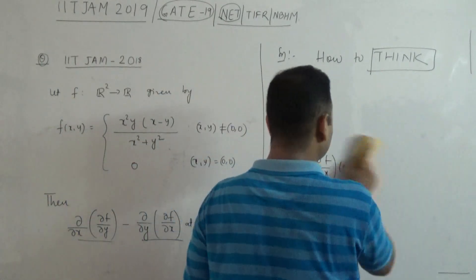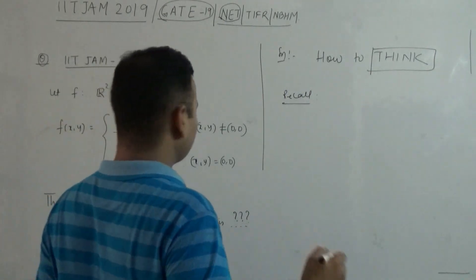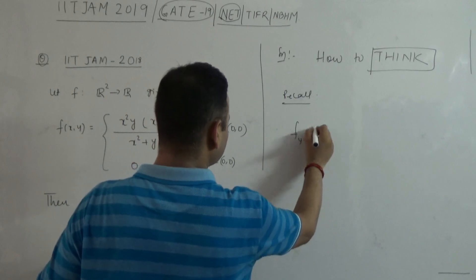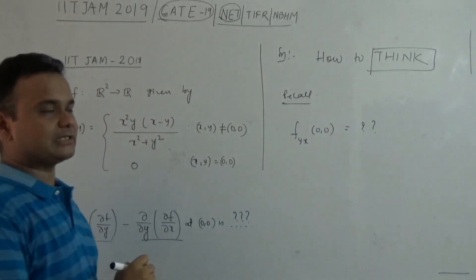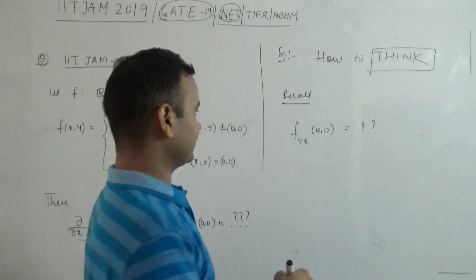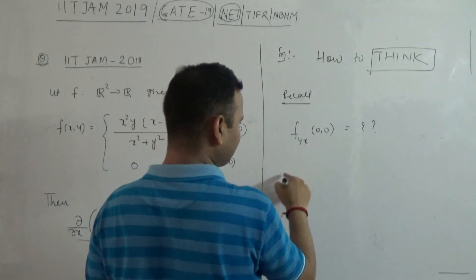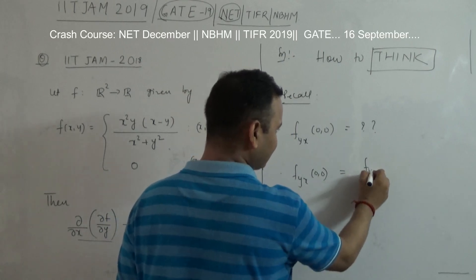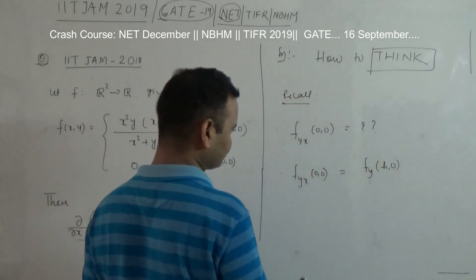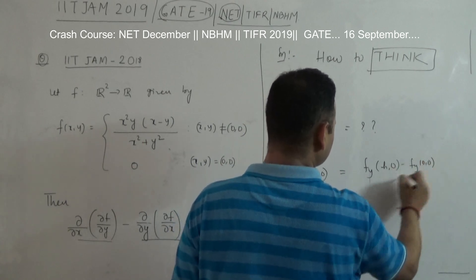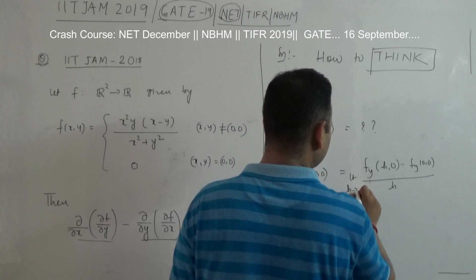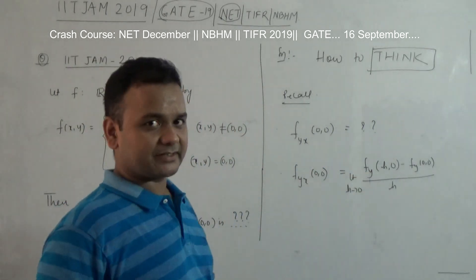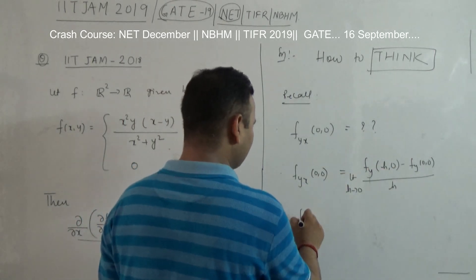So let me do this. I have to find f_yx at (0, 0). To evaluate this, first I have to partially differentiate with respect to Y, and then with respect to X. So what is the definition? f_yx at (0, 0) is the limit as h tends to 0 of [f_y(h, 0) minus f_y(0, 0)] divided by h. And f_y(h, 0) is the limit as k tends to 0 of [f(h, k) minus f(h, 0)] divided by k.